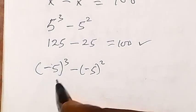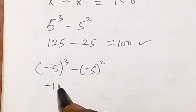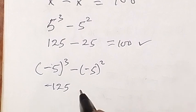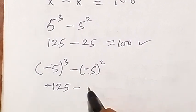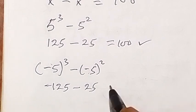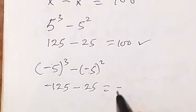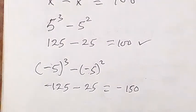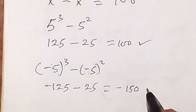We have minus 5 cubed, that will give us minus 125, of course this will give us minus 150, which is not equal to 100.